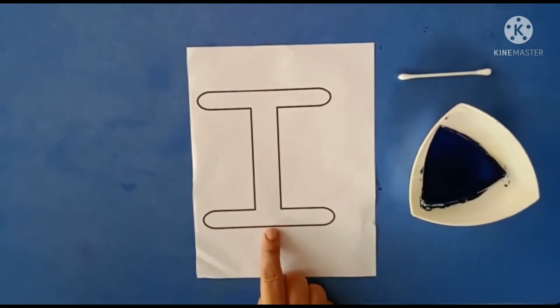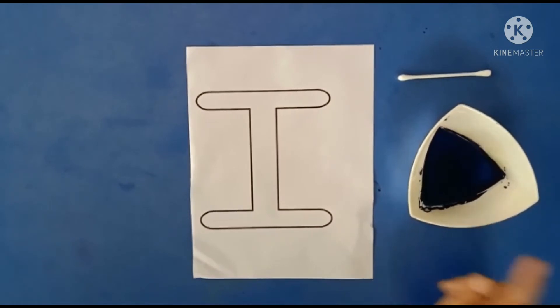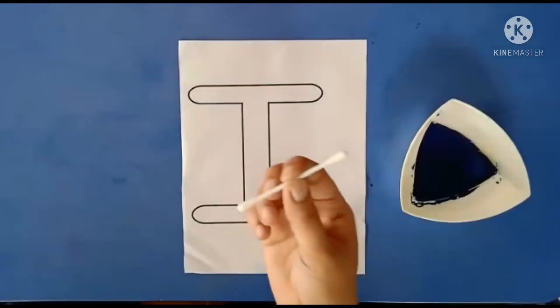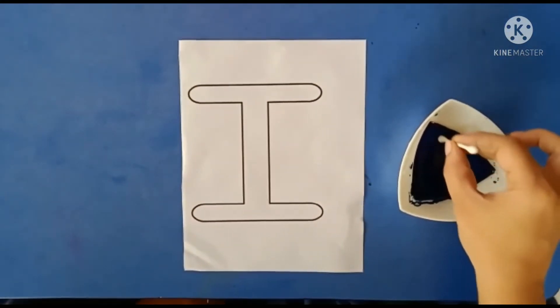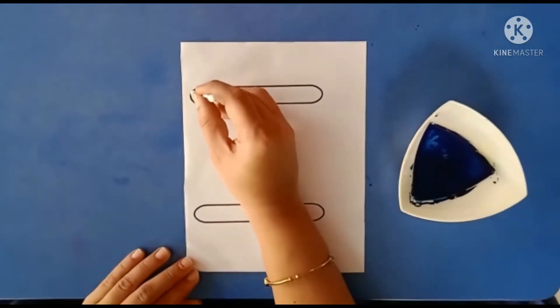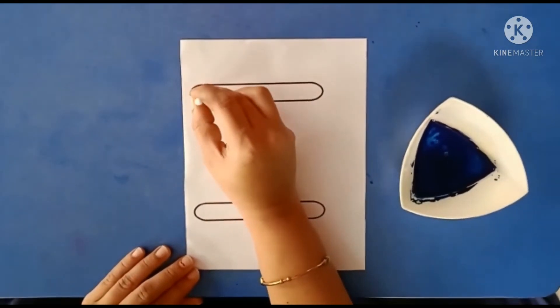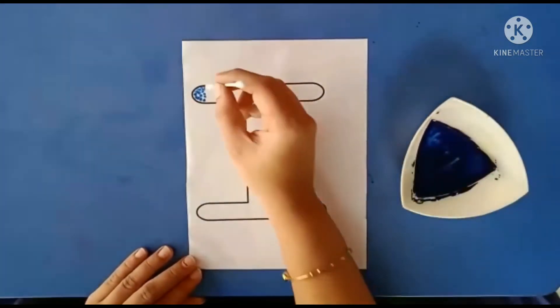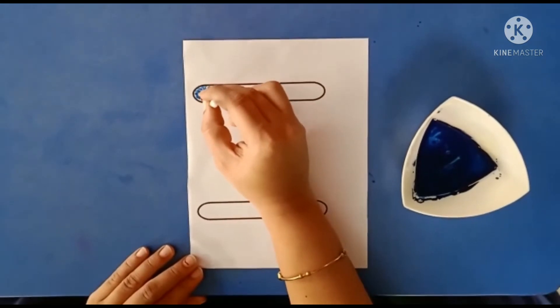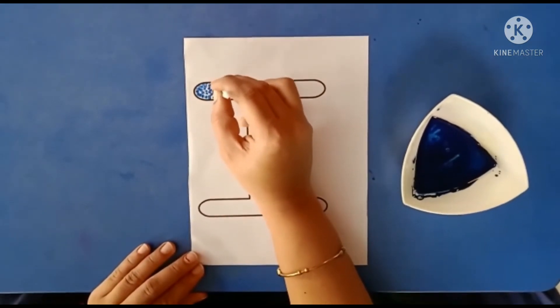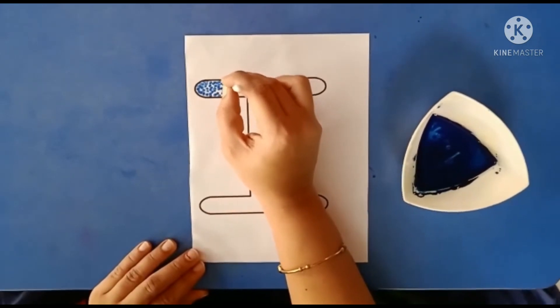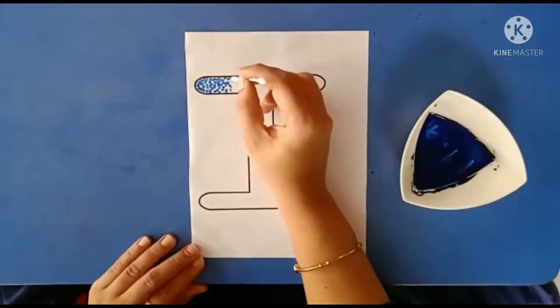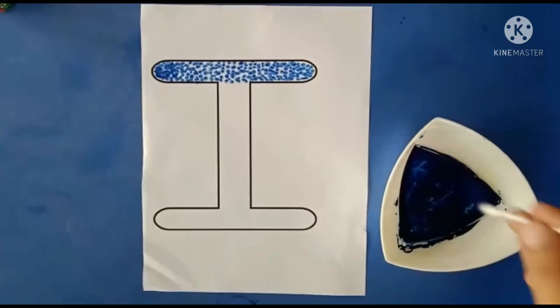Children, is activity ke liye hum kya karenge? Sabse pehle hum lenge blue water color aur Q-tip. Then this Q-tip ko hum is blue water color mein dip karenge. Aur uske baad hum apni activity ko start karenge. Is tarah se bachcho hum ko Q-tip ko dip karke is activity ko karna hai, okay?